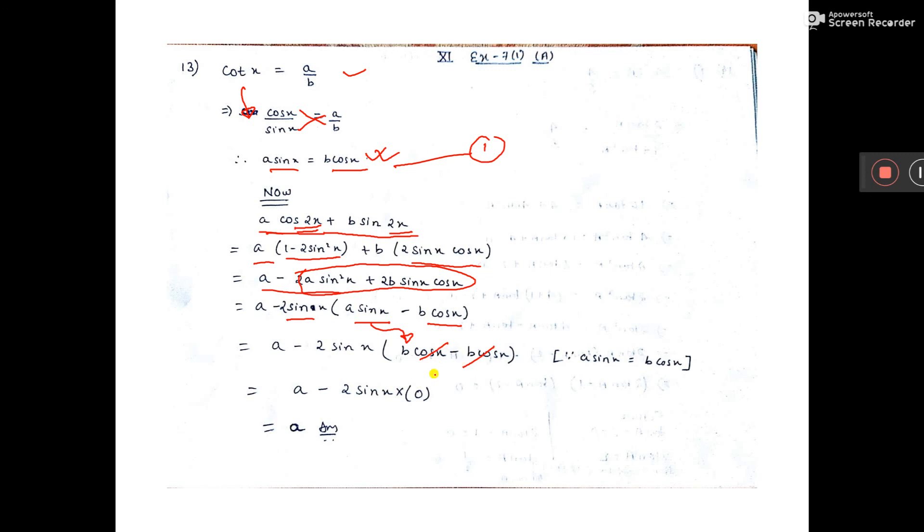Then this cut. It will be 0. So this into 0 means 0. a minus 0 is a. So this is the answer you have got. I think you have understood.